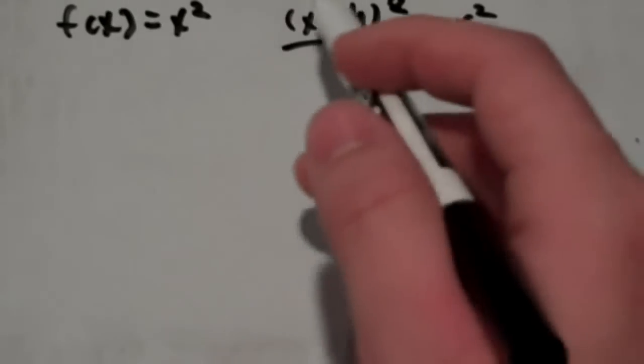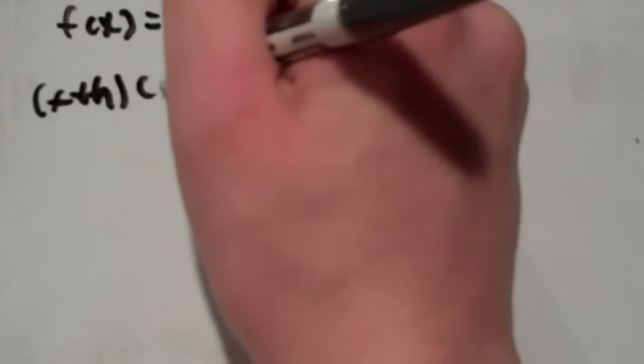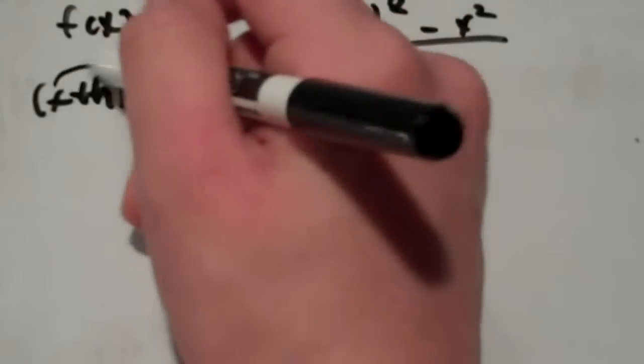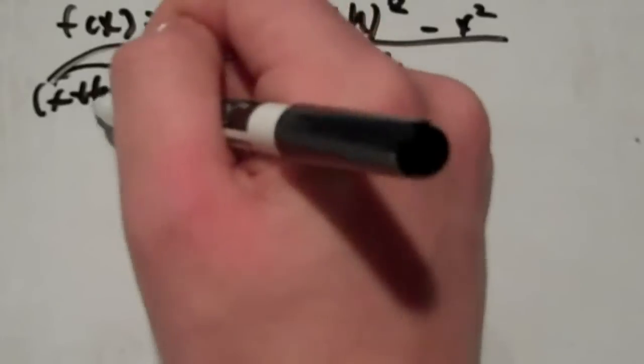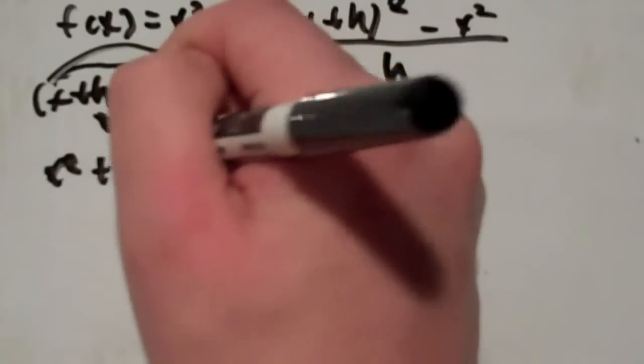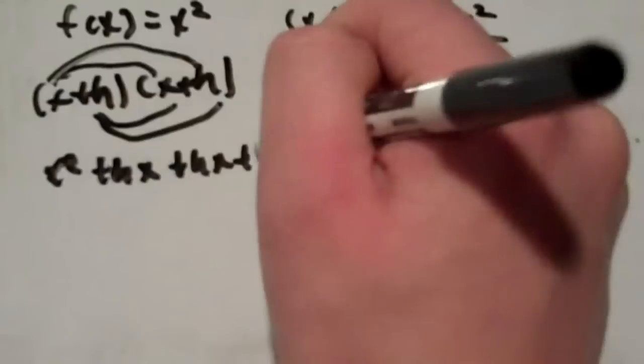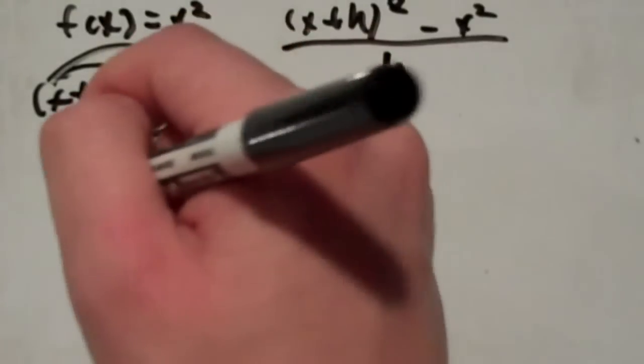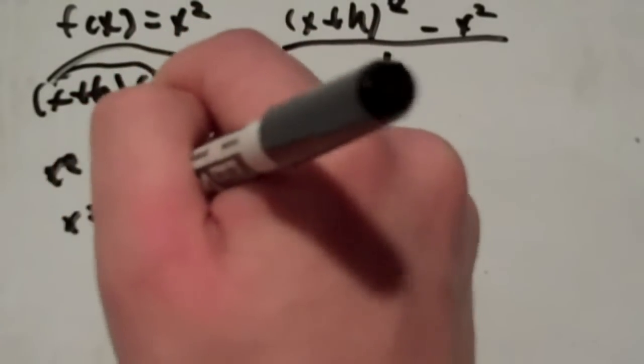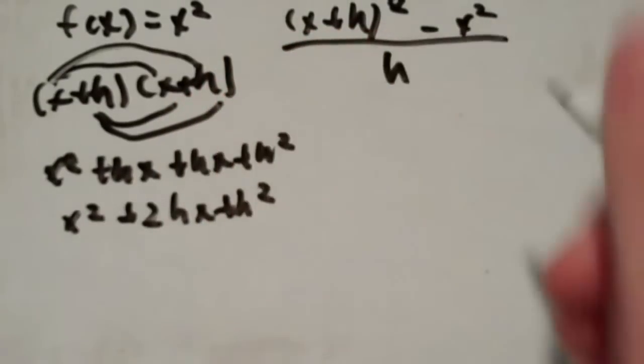Now, for squaring this, that would be the same as (x+h) times (x+h). And what we do here is we distribute. So we have this times this, and this times this. And this would be the same as x squared, or x times x, plus hx, plus hx, plus h squared, or h times h. And the hx's can combine to give us x squared plus 2hx plus h squared.